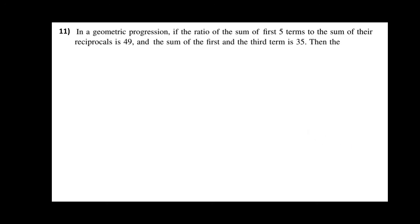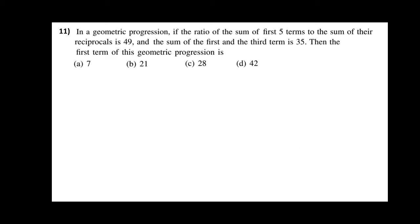In a geometric progression, if the ratio of the sum of first five terms to the sum of their reciprocals is 49, and the sum of the first and the third term is 35, then the first term of the geometric progression is: option A 7, option B 21, option C 28, option D 42. This question was already asked in the previous year JEE paper.